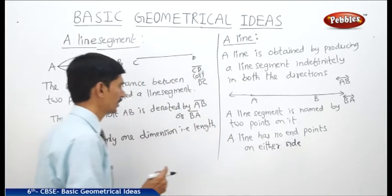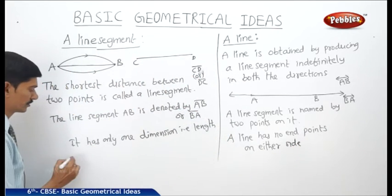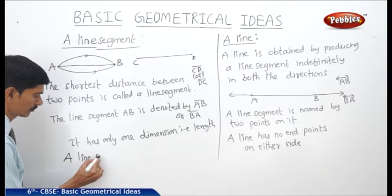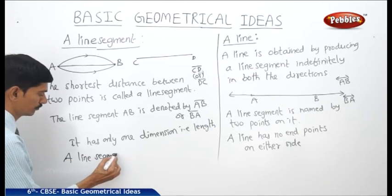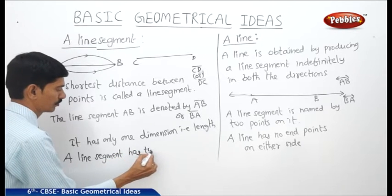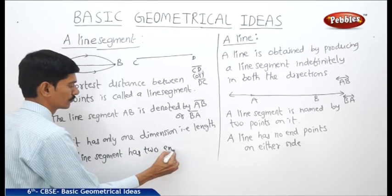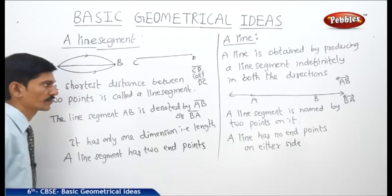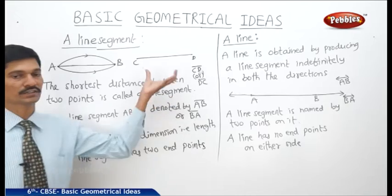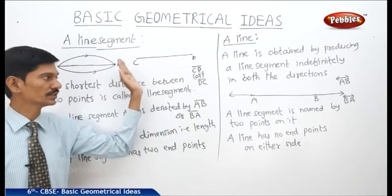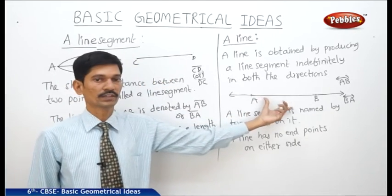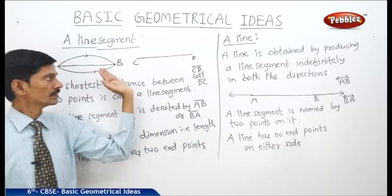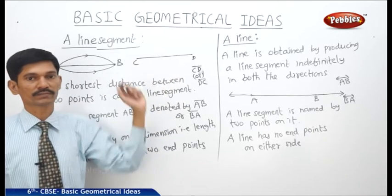Whereas a line segment has two end points. We can understand that a line segment is a portion of a line — if you take any portion of a line, it is said to be a line segment.